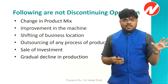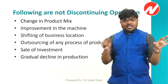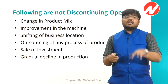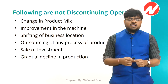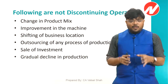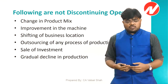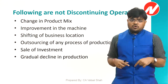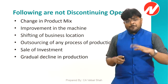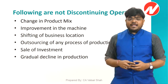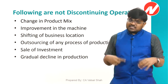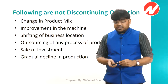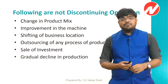Shifting a factory to another location — just transferring the business location — is never considered a discontinuing operation. Outsourcing a production process — for example, outsourcing process two to reduce power unit expenses — is never considered a discontinuing operation. Sale of investment is also not a discontinuing operation. And gradual decline in production, as discussed, is also excluded.